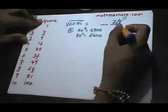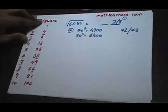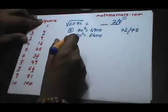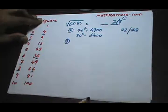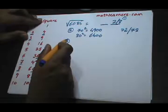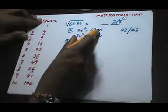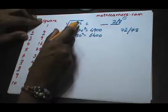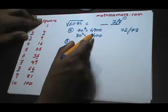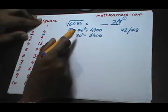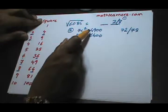Since we already know the last digit, the answer can be 72 or 78. The third step is to find exactly which number is the answer — we compare 6084 to 4900 and 6400 to see which it is closer to.